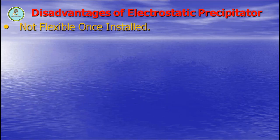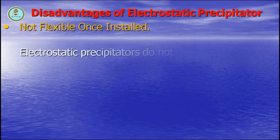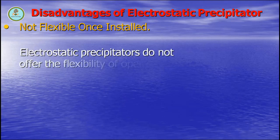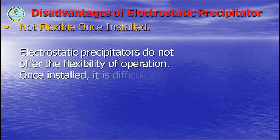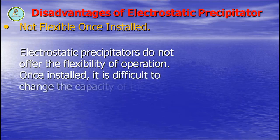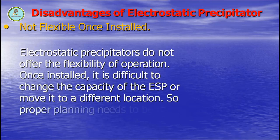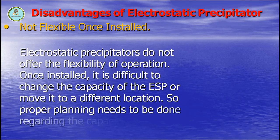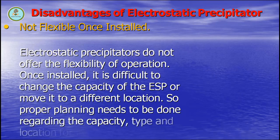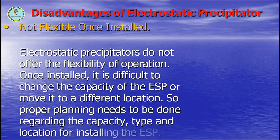Electrostatic precipitators are not flexible once installed. They do not offer flexibility of operation. Once installed, it is difficult to change the capacity of the ESP or move it to a different location. Therefore, proper planning must be done regarding the capacity, timing, and location for installing the ESP.